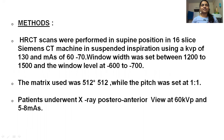Methods: HRCT scans were performed in the supine position using a 16-slice Siemens CT machine in suspended inspiration. The matrix used was 512 x 512. The window was set at 1200 to 1500 and the window level at –600 to –700. Patients underwent X-ray in posterior-anterior view at 60 kilovoltage and 5 to 8 milliampere per second.